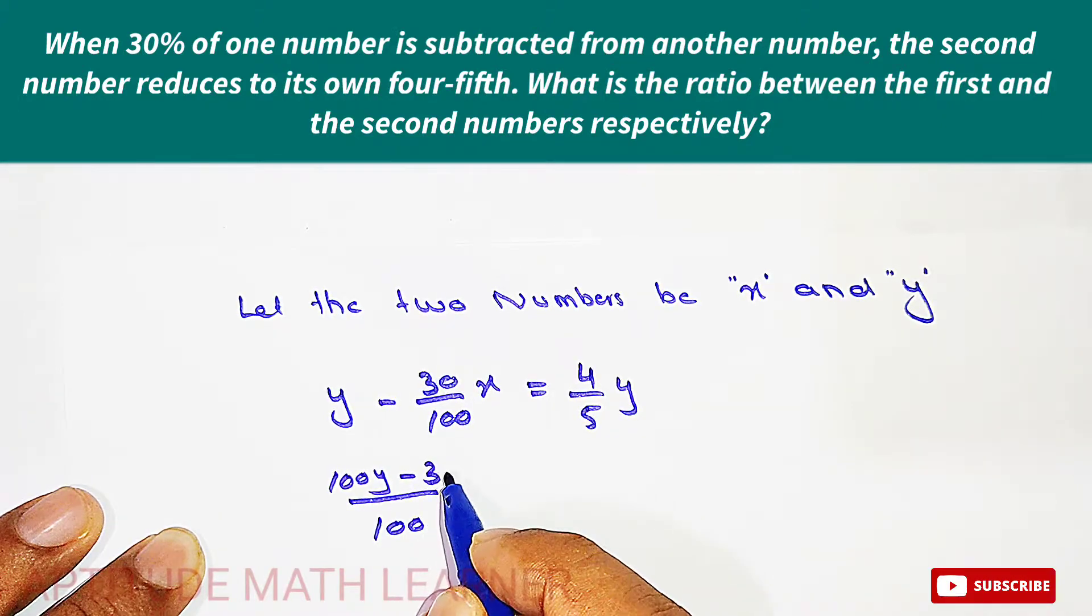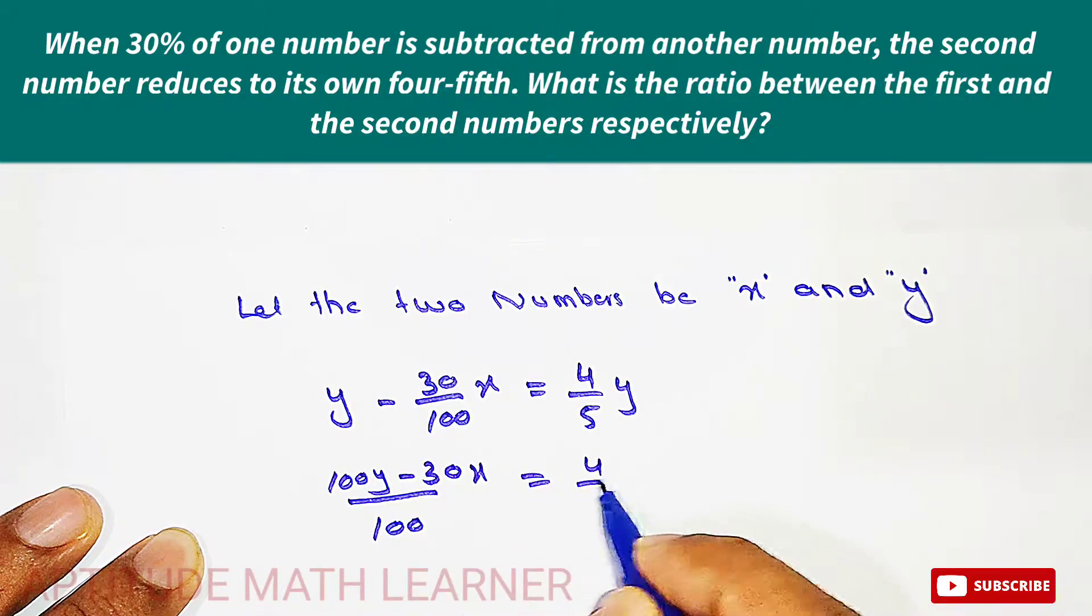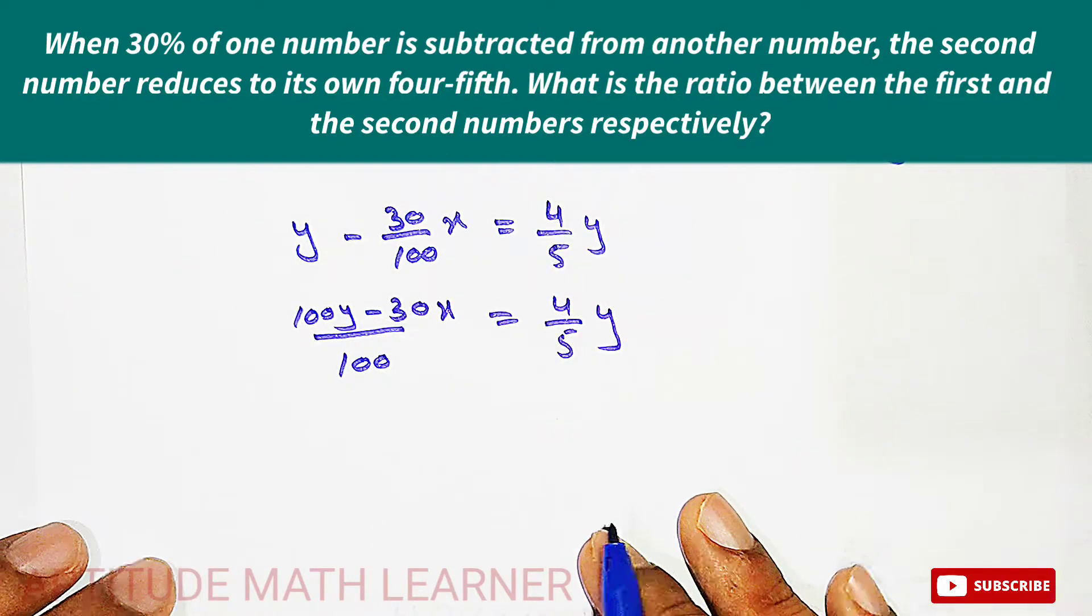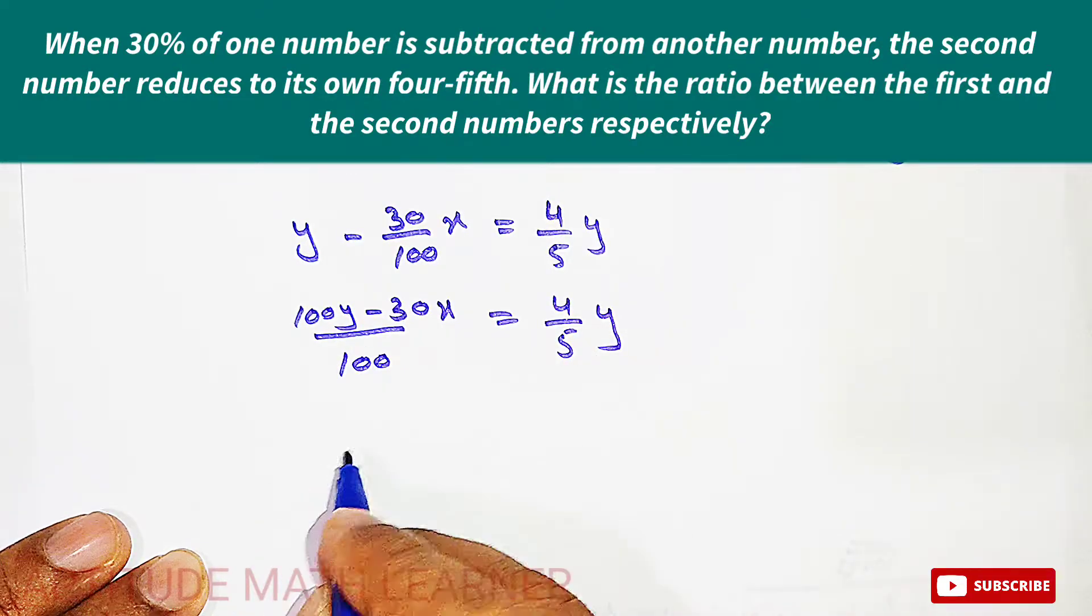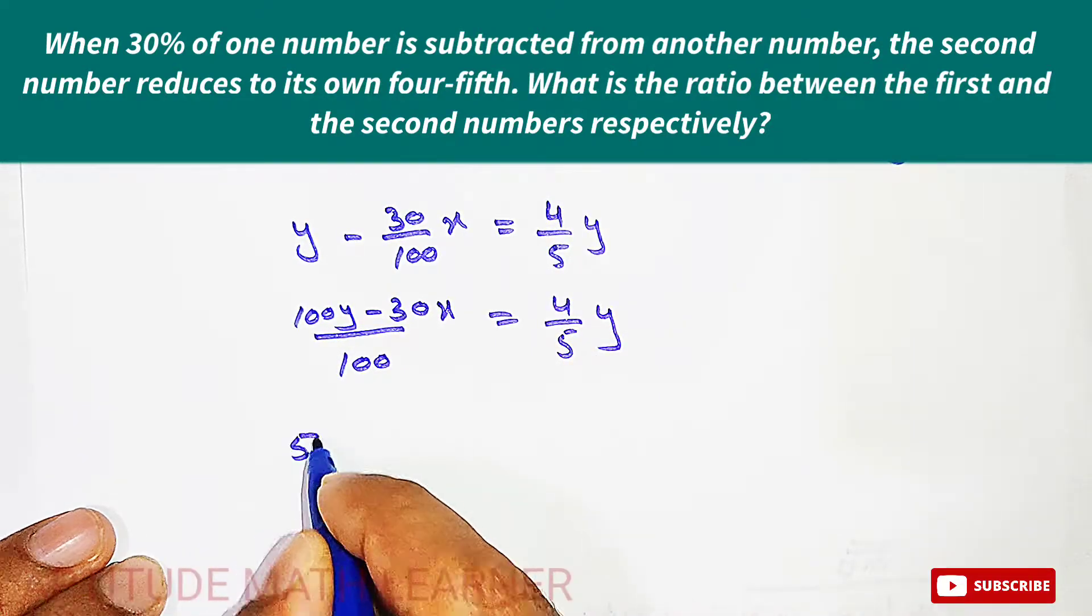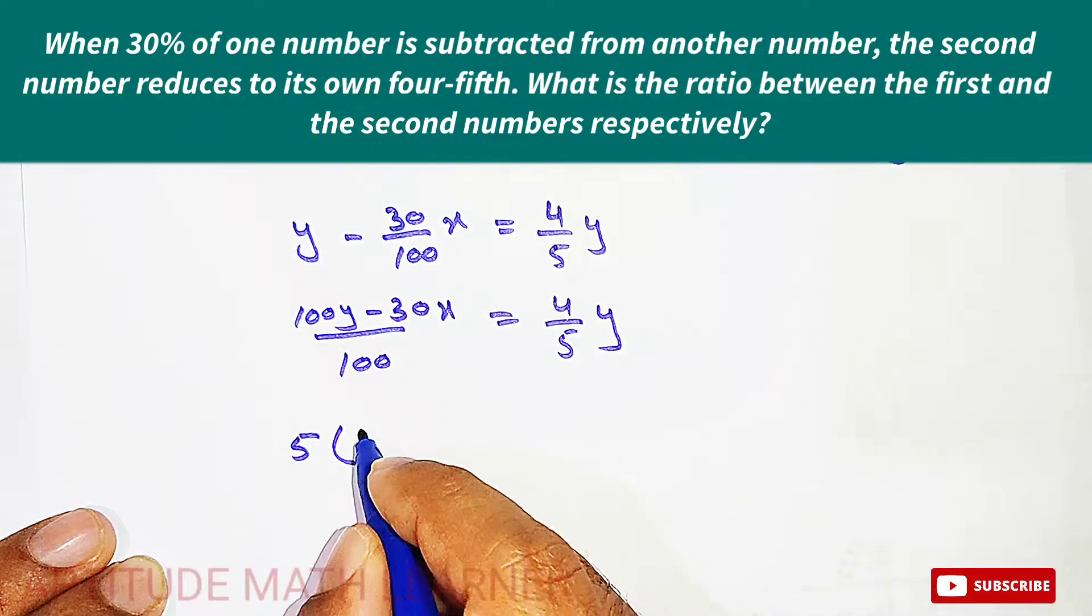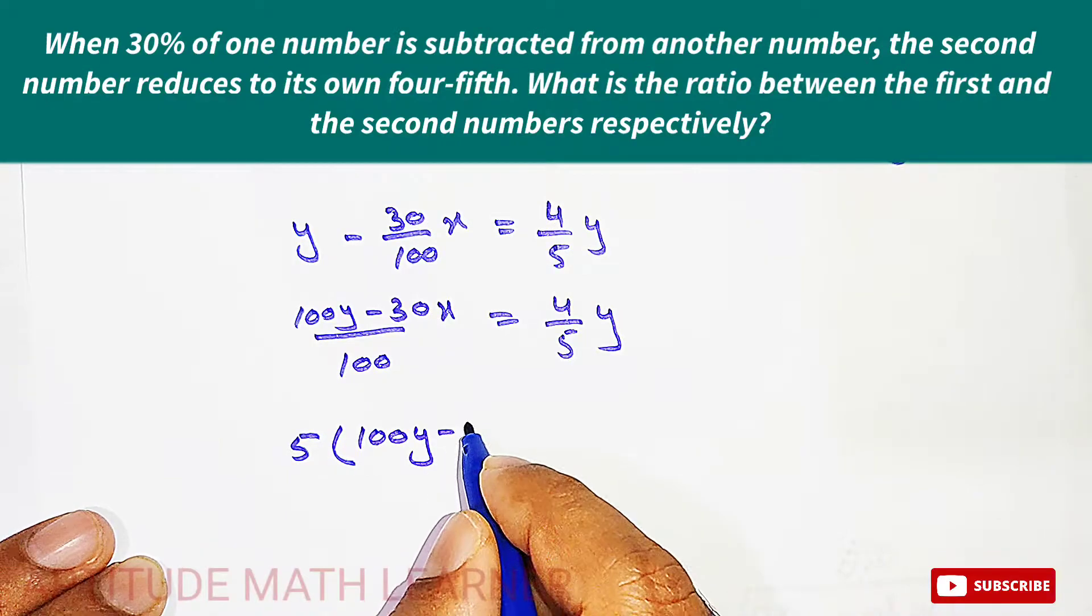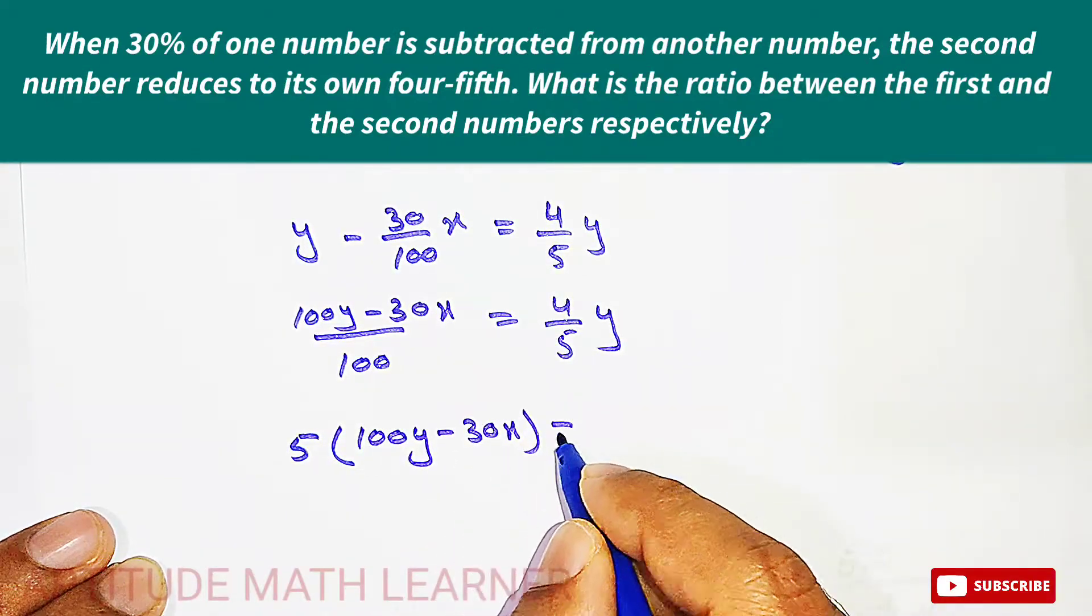Is equal to 4 upon 5 by y. And now we cross multiply it. So this becomes 5, it multiplies by the above number.